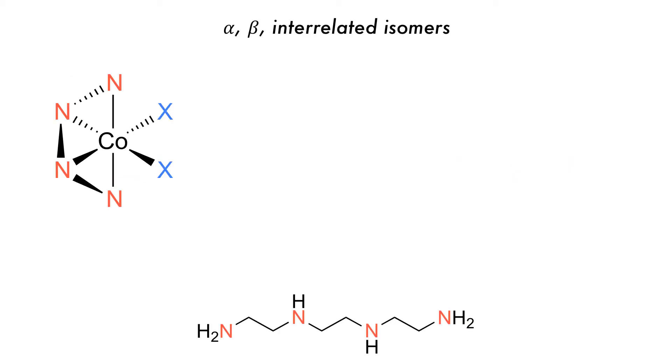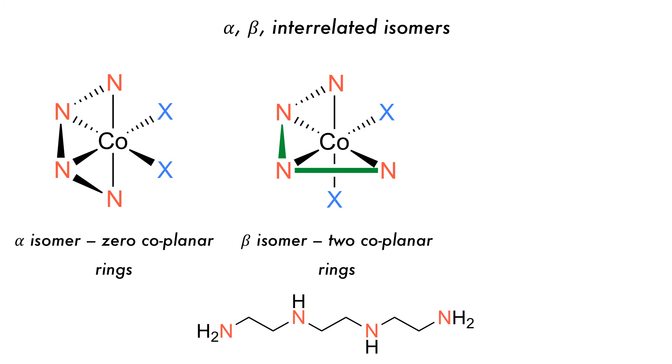When there are chelating ligands such as triethylene tetraamine, the ligand metal binding sites can happen in different places. When none of the rings are coplanar, this is called an alpha isomer. If two of the rings are coplanar, indicated by those drawn in green, it is a beta isomer.